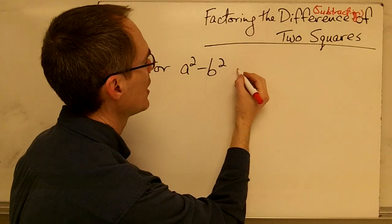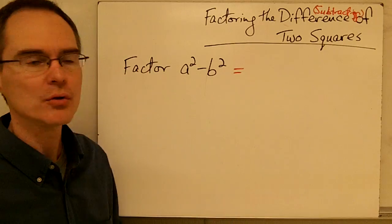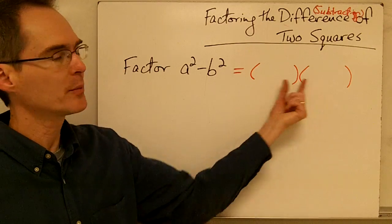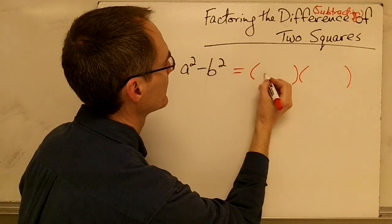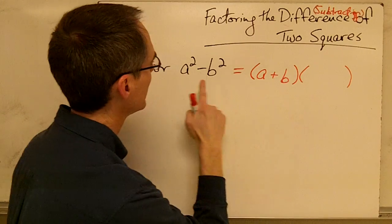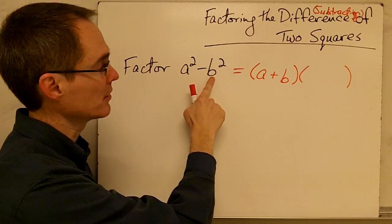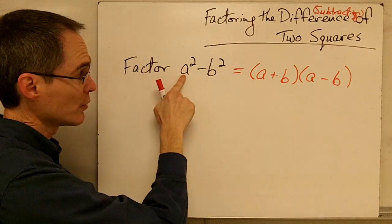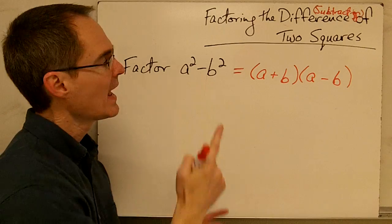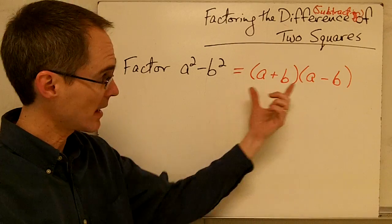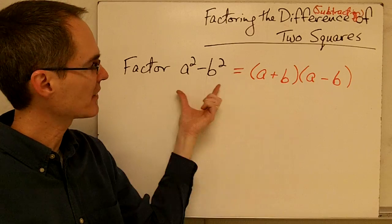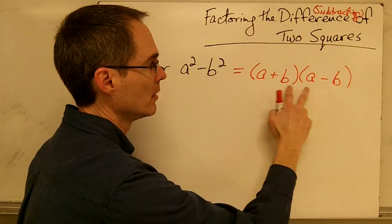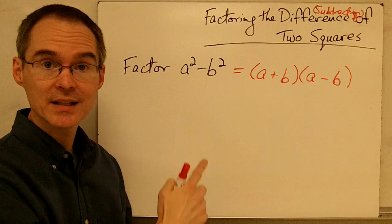The difference of two squares always factors into two binomial expressions. It looks like a plus b — that is the square root of the first term plus the square root of the second term — multiplied times a minus b, which is the square root of the first term minus the square root of the second term. We can check that this is the correct factorization by using the FOIL method and multiplying these two binomials together to see if we get a squared minus b squared.